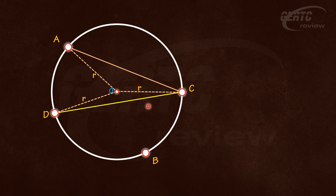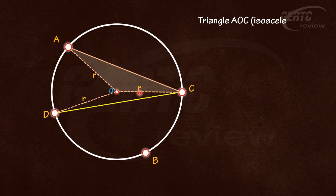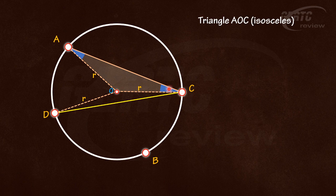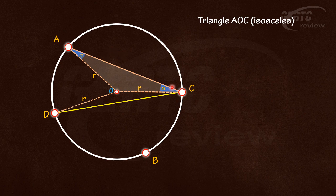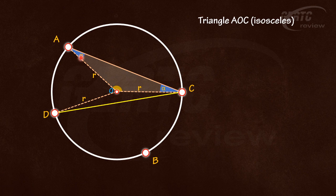Notice that we have here isosceles triangles. Triangle ACO or AOC is an isosceles triangle with two sides equal. If two sides are equal, the angles opposite to those equal sides are also equal. Let's call them alpha. Then we can now solve this angle here at the center, angle AOC. That will be 180 degrees minus two times alpha, because the sum of the angles of a triangle are always equal to 180 degrees.